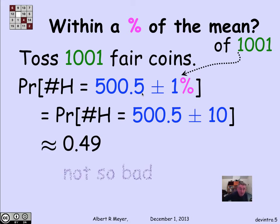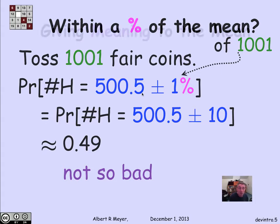And that's about 0.49. It's almost 50-50, which is not really so bad. So we have a 50-50 chance of actually being within 1% of the expected number when I flip 1,001 coins.